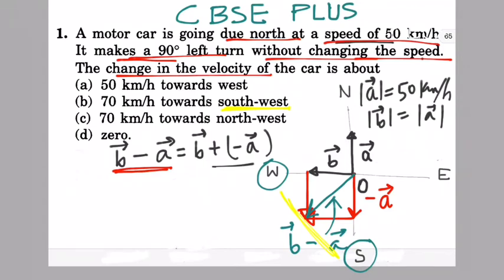Now we'll find the magnitude, if it is 70 km/h or not. For that we can use the magnitude of the final velocity, which should be under root a² plus b² plus 2ab cos θ. This is the magnitude of the addition of vectors.